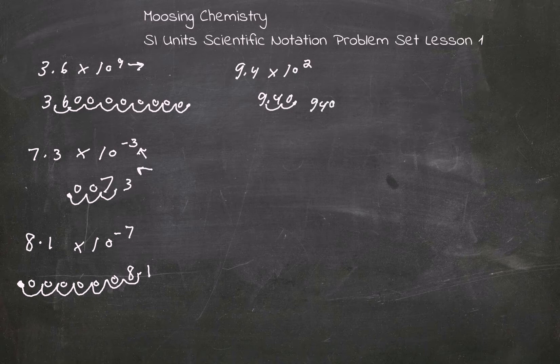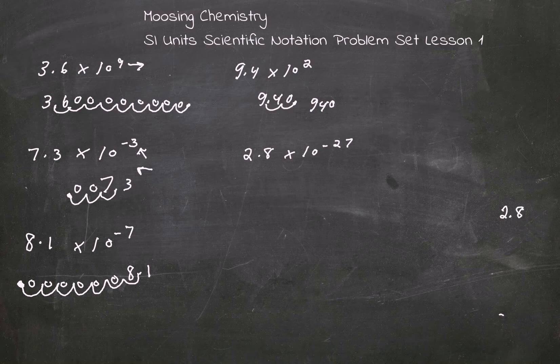All right. And let's do something ultimately ridiculous. So we're going to go 2.8. Well, let's keep it in true form here. 2.8 times 10 to the negative 27. So what I'm going to do is I'm going to put my 2.8 over here because I know I'm going to write a boatload of zeros.